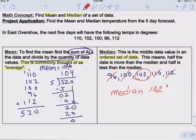And that's how you find the median of a set of data. And again, it's just what the average temperature is. It's around 102 degrees for the week, and our mean is 104. So our median and our mean, they're pretty close together. So either one is a pretty good measure of what would be considered average.